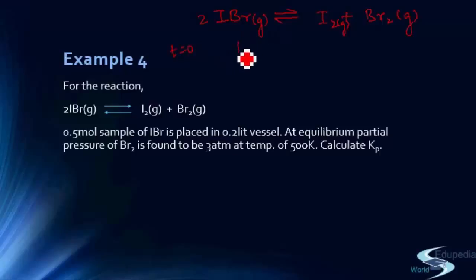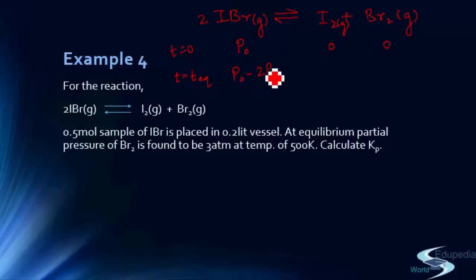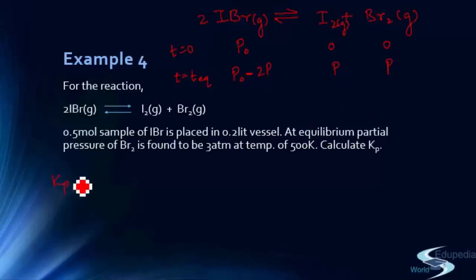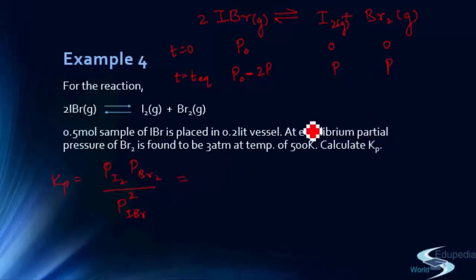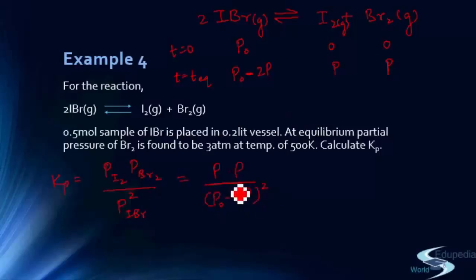Using the pressure method: at t=0, partial pressure of IBr = P0 and products = 0. At equilibrium, 2P of IBr is consumed, forming P of I2 and P of Br2. The Kp expression becomes: Kp = (P_I2 × P_Br2) / (P_IBr)² = P × P / (P0 − 2P)².